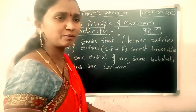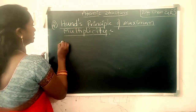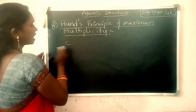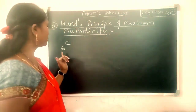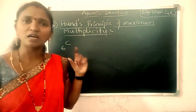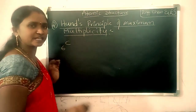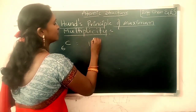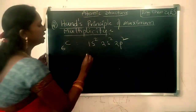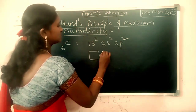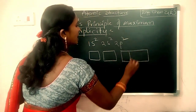Now let us see some examples of Hund's rule of maximum multiplicity. Let us take an example of Carbon. Carbon has atomic number 6, which means it contains 6 electrons. The electronic configuration of Carbon is 1s2, 2s2, 2p2. Here the 1s orbital, 2s orbital, and 2p orbitals — 2p has 3 subshells: px, py, and pz.